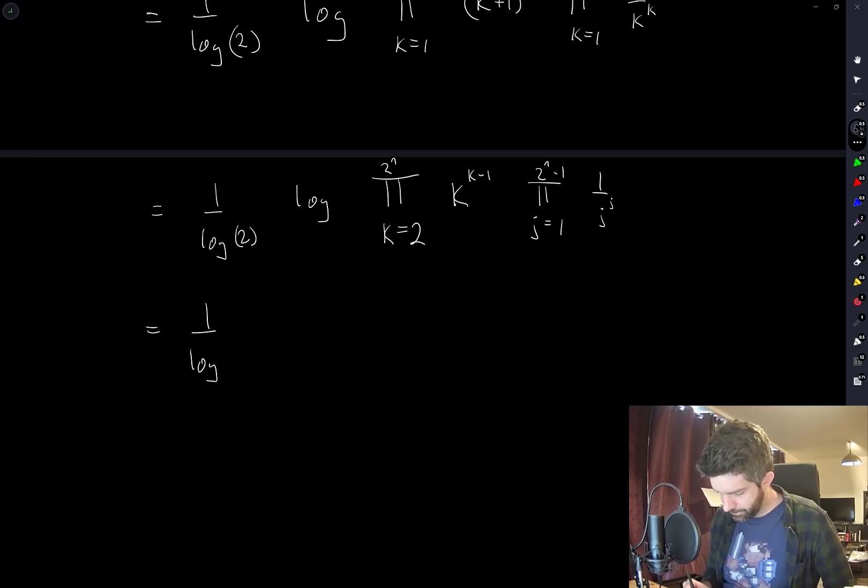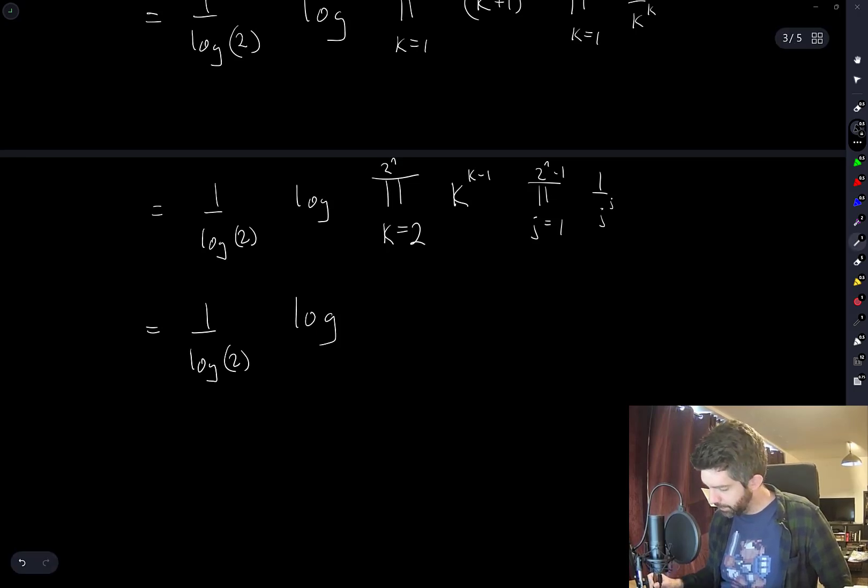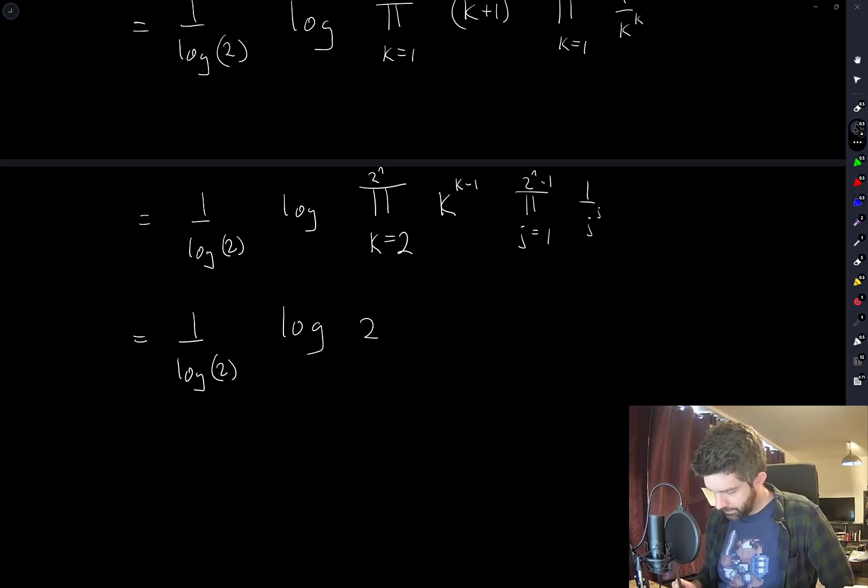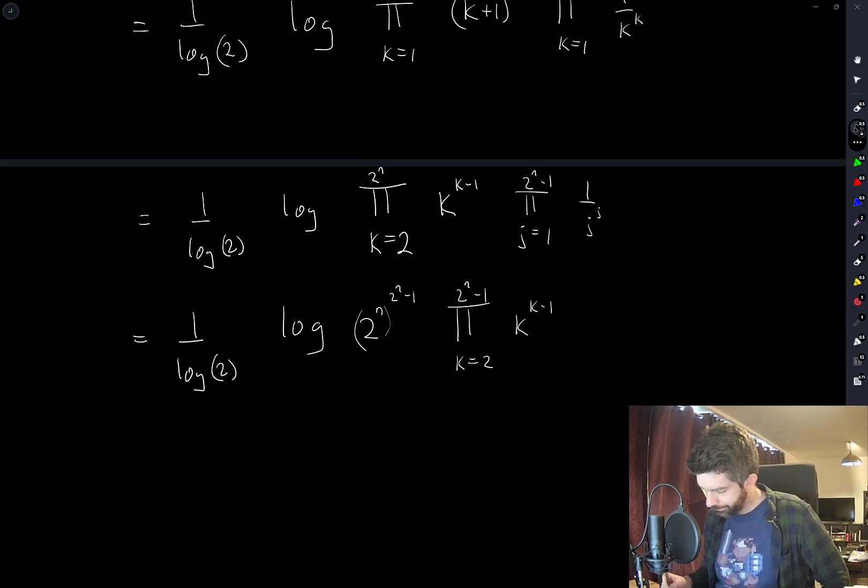What I'm going to do now is here I'm going to extract the last term, and here I'm going to extract the first term. So here I have 2 to the N to the power of 2 to the N minus 1. That's the largest term. And I'm left with a product K goes from 2 to 2 to the N minus 1 of K to the K minus 1. Here I'm left with a product K goes from 2 to 2 to the N minus 1 of 1 over K to the K.